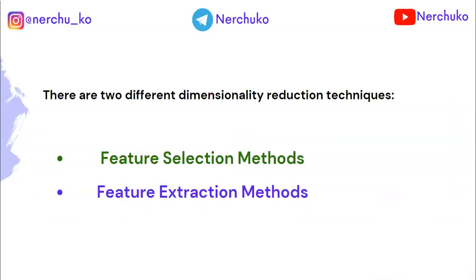Now, there are two different dimensionality reduction techniques. The first one is the feature selection method and the second one is the feature extraction method. In feature selection, we create a new dataset that contains the same original features. In feature extraction, we take the properties from the old dataset and converge them into completely new data.